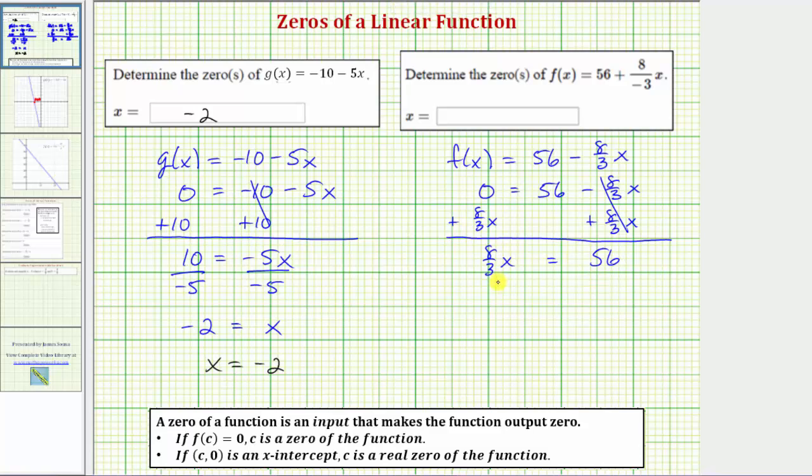let's multiply both sides by the reciprocal of eight-thirds, which is three-eighths. So we'll multiply the left side by three-eighths and the right side by three-eighths.